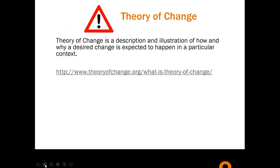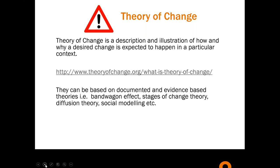A theory of change is a description and illustration of how and why a desired change is expected to happen. These theories can be based on documented, evidence-based theories. In the health sector you'd know diffusion theory, universal models — the drug and alcohol sector uses stages of change theory, innovation increasingly uses diffusion theory with early adopters and later adopters. We talk about these theories all the time, and in your work they're often implicit. What a theory of change does is make it more explicit.